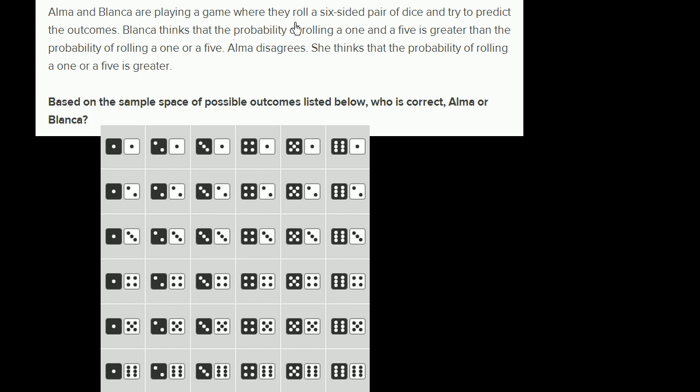Alma and Blanca are playing a game where they roll a six-sided pair of dice and try to predict the outcomes. Blanca thinks that the probability of rolling a one and a five is greater than the probability of rolling a one or a five. Alma disagrees. She thinks the probability of rolling a one or a five is greater. Based on the sample space of possible outcomes listed below, who is correct, Alma or Blanca?